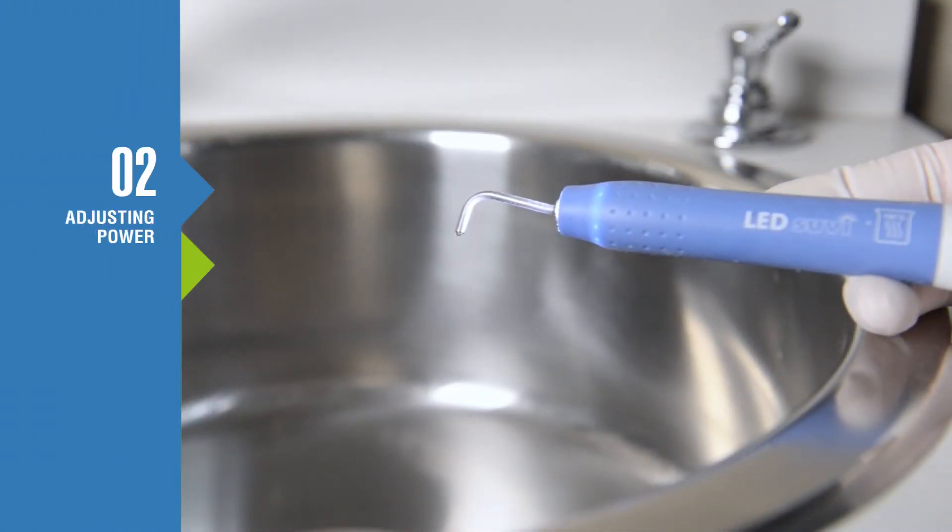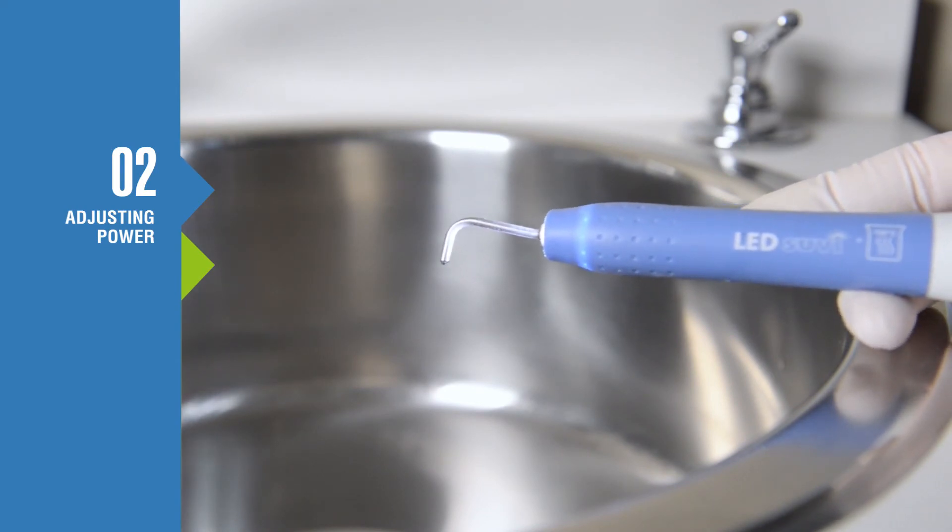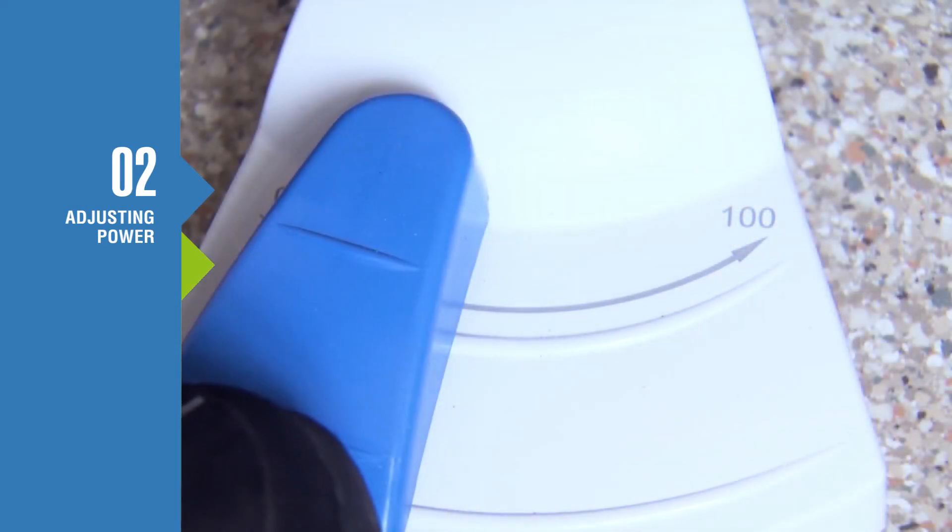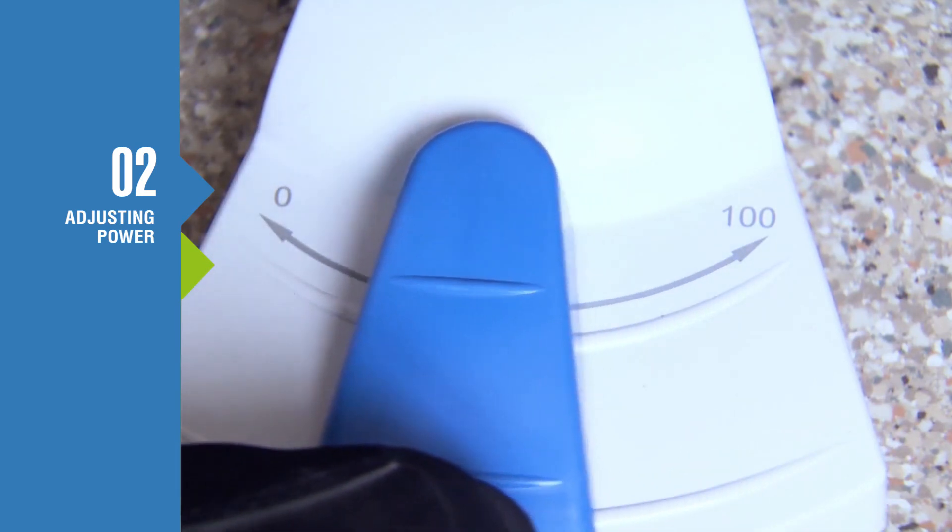To adjust the water flow for optimal performance, start by holding the nozzle down toward the cuspidor bowl or sink. Press the foot control to activate the polisher and slide the pedal to adjust the power.